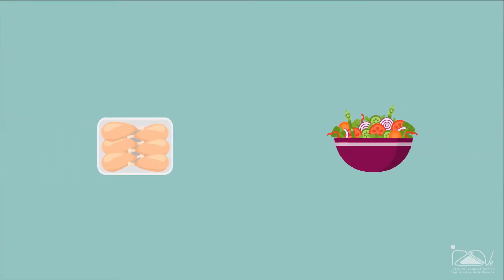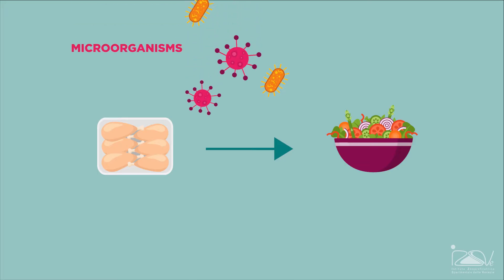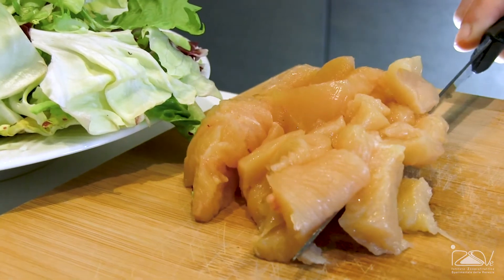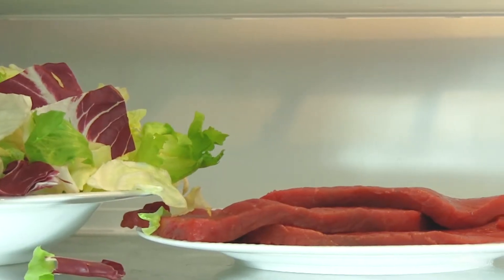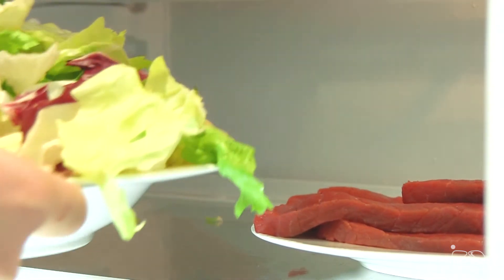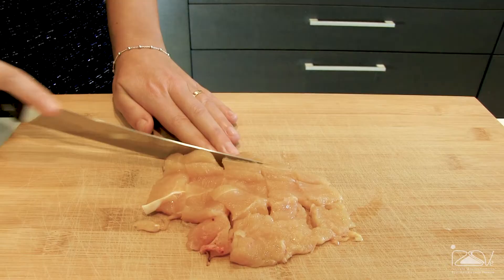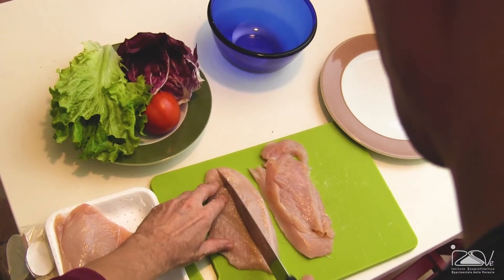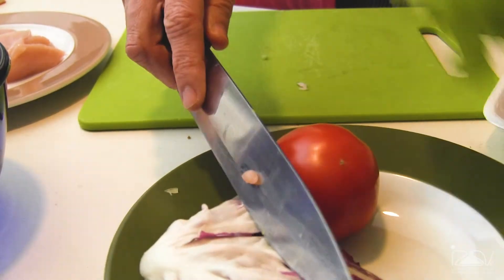The term cross-contamination of foods refers to the unintentional transfer of microorganisms or chemical substances from one food to another. The transfer can occur directly when two foods come into physical contact or one drips onto another, or indirectly through intermediate vehicles such as work surfaces, cooking utensils or the hands of the person handling and preparing the food.